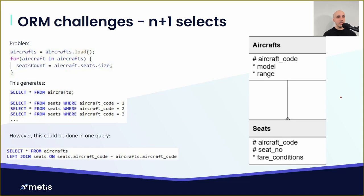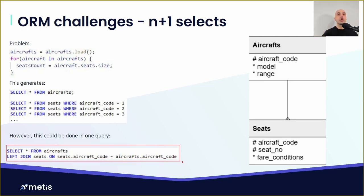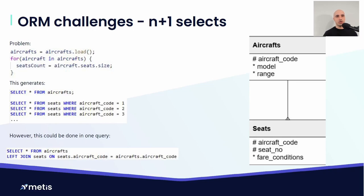We can fix N+1 by reconfiguring the ORM to fetch data eagerly instead of lazily — using a single query like SELECT * FROM aircraft JOIN seats. However, this fix is a configuration key — something declared elsewhere or set via environment variables or the data layer schema, not clearly visible in the application code. So if a co-worker submits a pull request with this code, can you tell whether it will generate N+1 queries or just one?